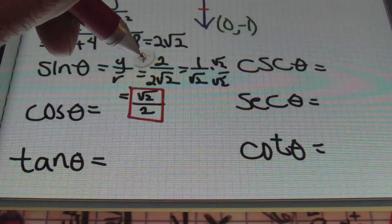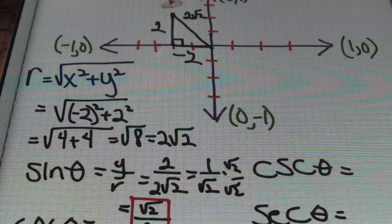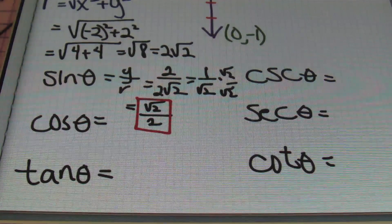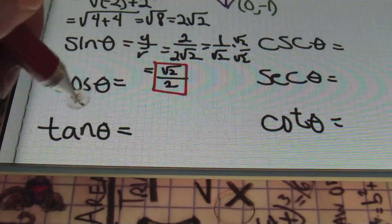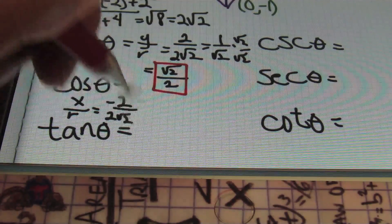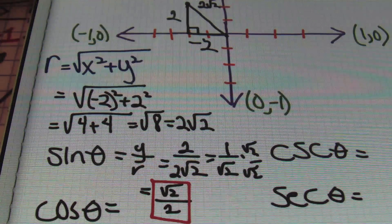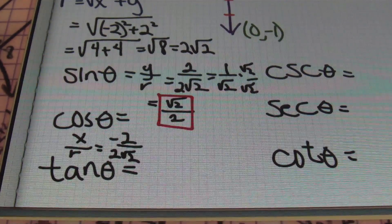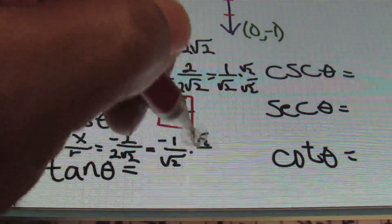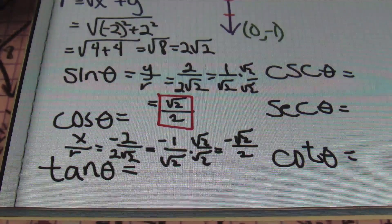Starting out with the ratio of y over r, I plugged in those values from my triangle, knowing that my y value is positive two and that my r value is two times the square root of two. We simplify from there to get a result of square root of two over two. Next, I'm looking at cosine. Cosine's value is going to be x over r. My x value is negative two, and my r value is still two times the square root of two. The twos will cancel out to give me a result of negative one over the square root of two, and I'll then rationalize that to end up with a result that is negative square root of two over two, and that's my answer for cosine theta.